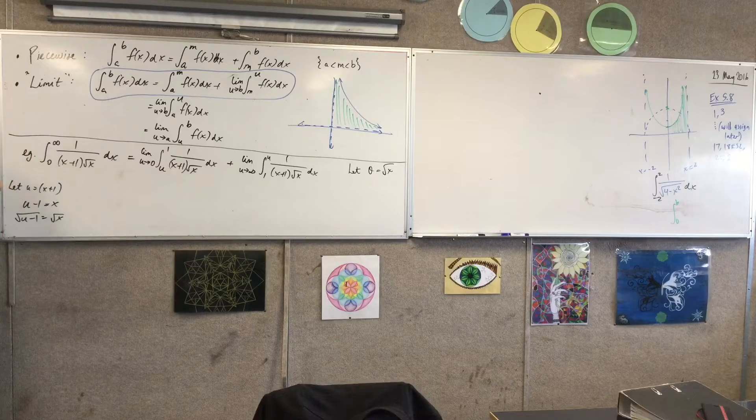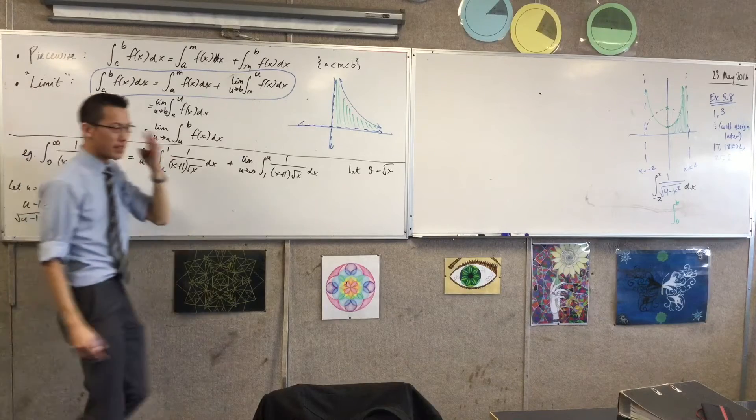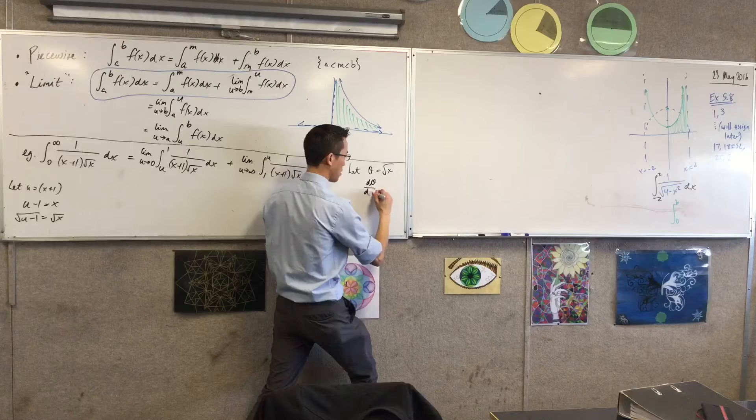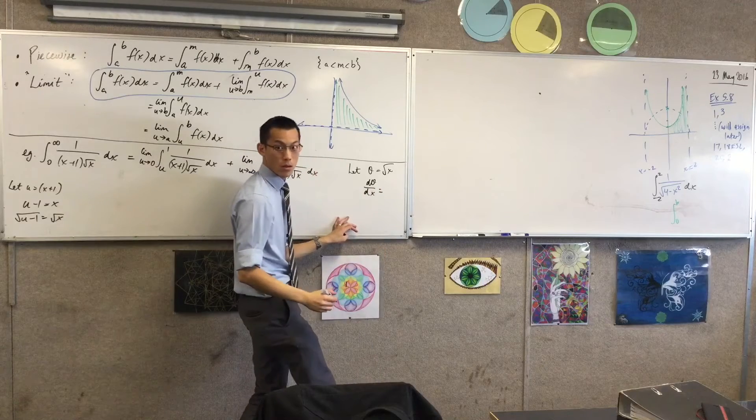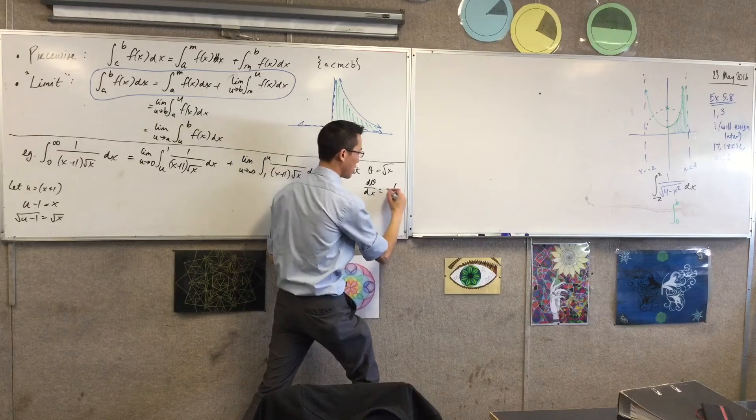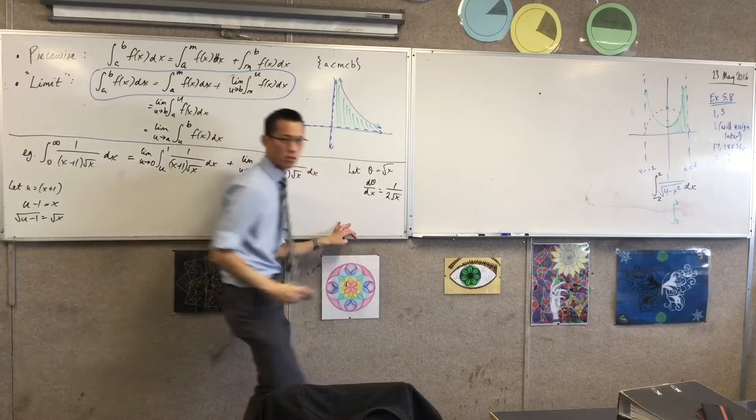If theta is root x, which is x to the power of a half, what is d theta on dx? 1 on 2 root x.